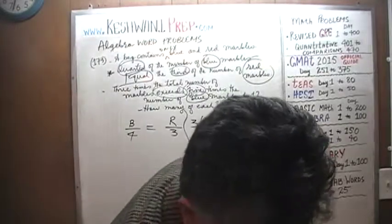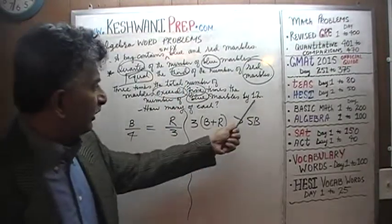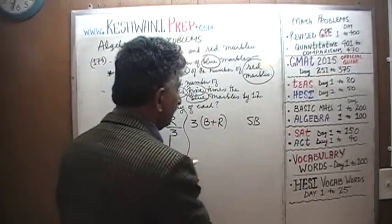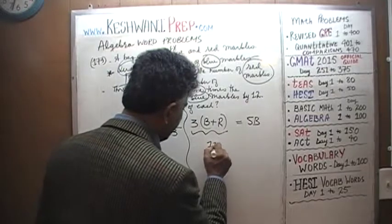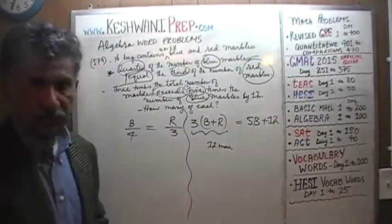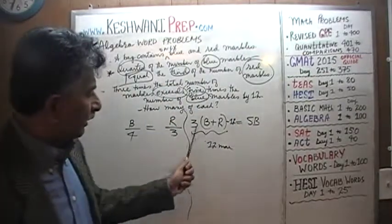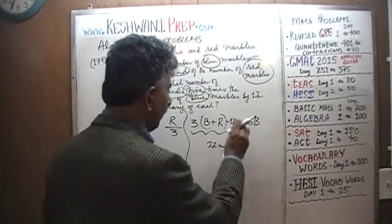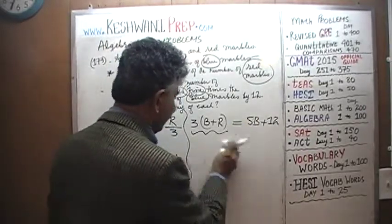Three times the total number of marbles exceeds five times the blue marbles by 12. To justify an equal sign, we have two options: we can add 12 to the 5B side, making both sides equal, or we can subtract 12 from the 3(B+R) side. Either way it's the same thing. I'm going to put plus 12 on the right side since there isn't room on the left.